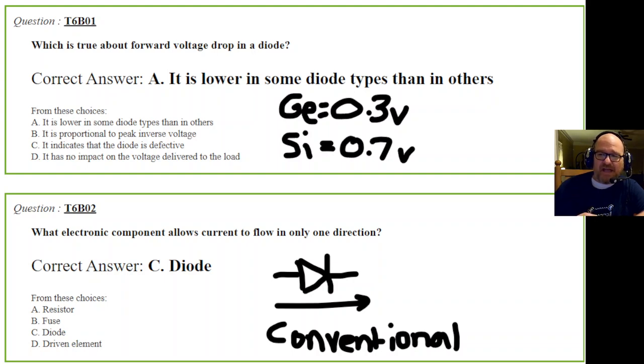If you look, I have GE - that's a germanium diode. They're not used as much anymore, but they have a voltage drop of about 0.3 volts. I've used them making guitar effects. They have a different sound than a silicon diode, which has a voltage drop of 0.7 volts.